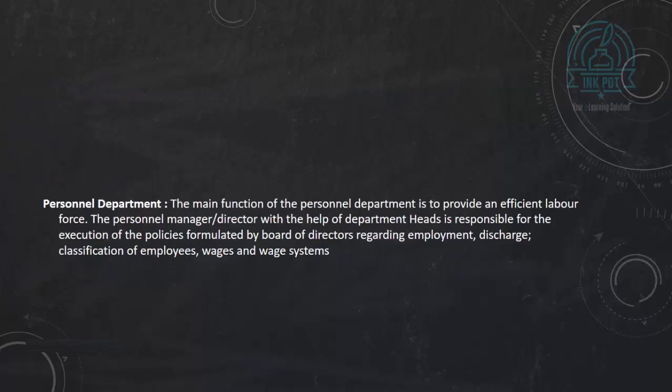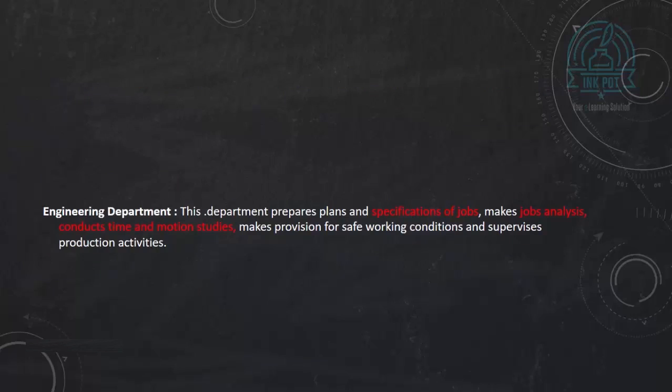Next, we have the engineering department. The engineering department helps in controlling working conditions for each job, department, or process. They prepare plans for each job scheduled, supervise the production department, and conduct time and motion studies, job evaluation, merit rating, etc., which we will discuss later.